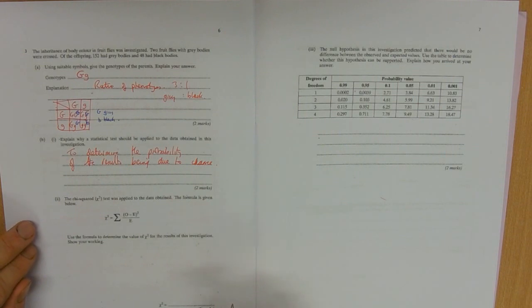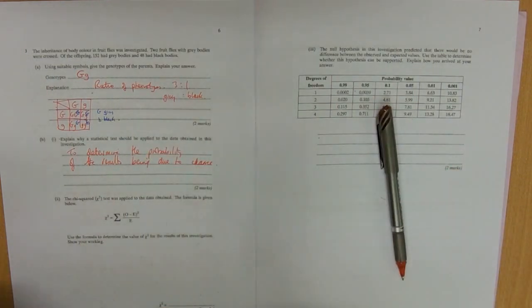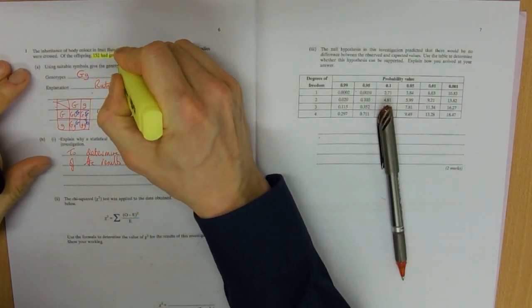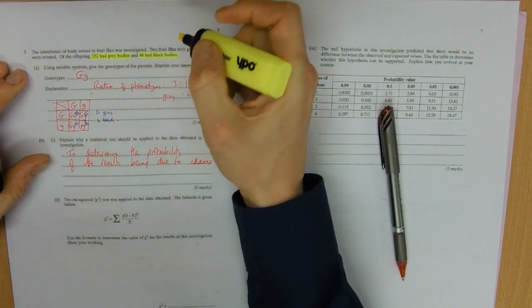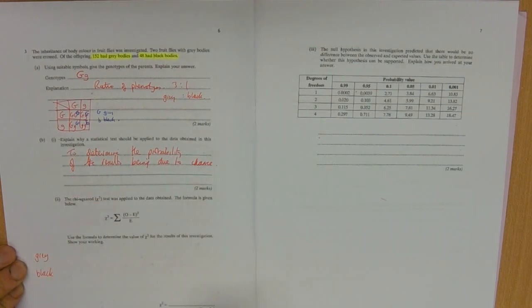Here's a chi-squared test and here's a formula. Use the formula. Well, if you're like me and you don't really like writing a lot of numbers down into a big formula, I'm going to cheat and draw a table. We have got greys, 152 had grey bodies, 48 had black bodies. So I have got grey and black. I've drawn this table lots of times.